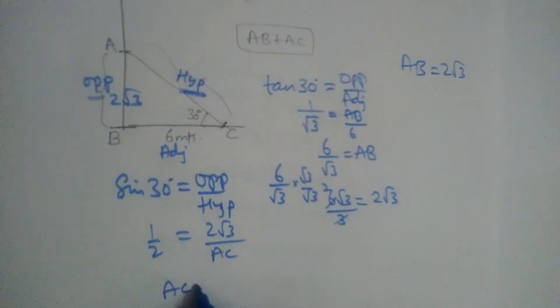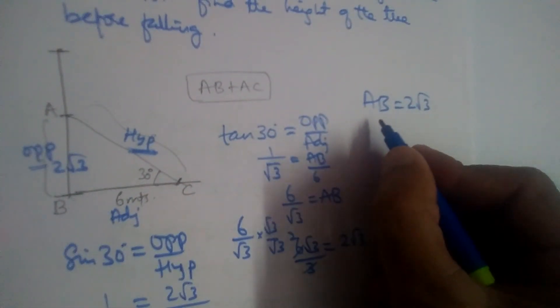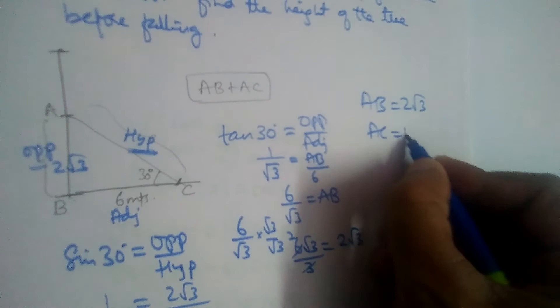Now cross multiply, AC will become 4 root 3. 2 to the 4, 4 root 3. So what is AC now? It is 4 root 3.